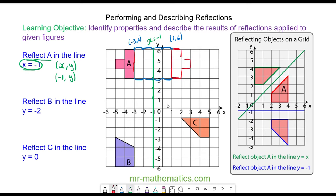I can check that this is right: if I take another vertex, say the one at 2, 5, I am 1, 2, 3 units away and 1, 2, 3 I get to the corresponding vertex on the object. So after I have performed my reflection I have created an image. Before the reflection we have the object.